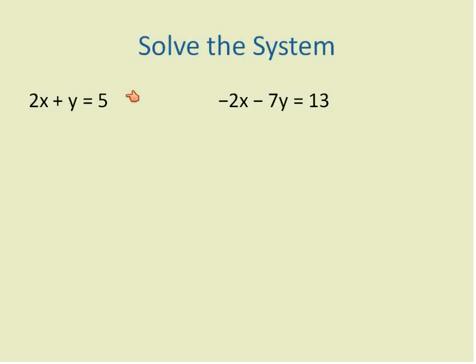We're given two equations here, 2x plus y equals 5, and negative 2x minus 7y equals 13. I look for terms that are the same. In this case, 2x and negative 2x.